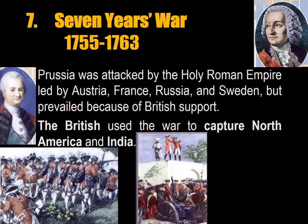The Seventh Systemic War is the Seven Years' War from 1755 to 1763. It included all six great powers of the international system. It was basically Prussia, which was attacked by the Holy Roman Empire led by Austria, France, Russia, and Sweden, but it ultimately prevailed because of British financial support. The British used the distraction of this war to capture North America and India. Clive of India was the victor at the Battle of Plassey, which was the key victory that put the British in domination of India.